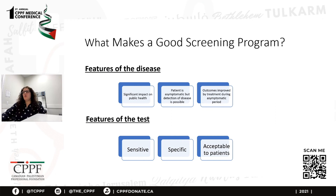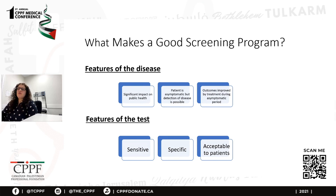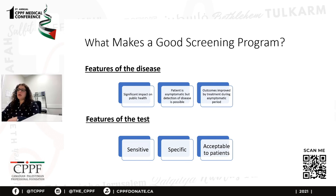What makes a good screening program? When discussing screening, we want to think about features of the disease: Is there a significant impact on public health? Is there an asymptomatic period where detection is still possible, and will outcomes be improved by treatment during that period? We also want to consider features of the test — its sensitivity, meaning the ability to correctly identify patients with the disease, and its specificity, the ability to correctly identify people without the disease — and we want to make sure the screening test is acceptable to patients.